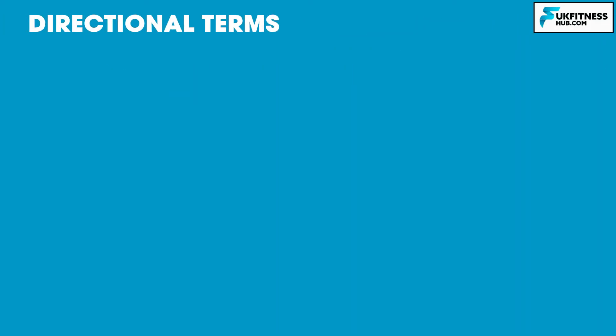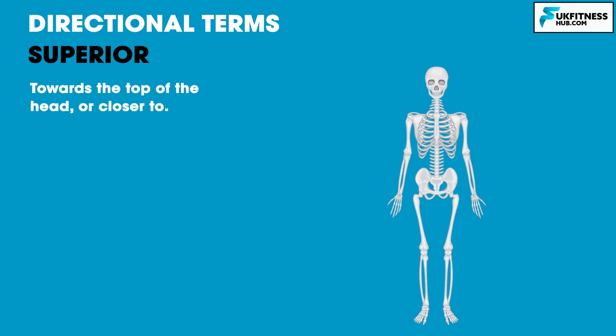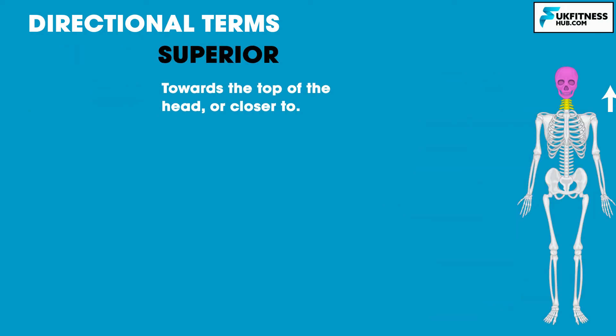The first directional term we're going to look at is superior. Superior means towards the top of the head or closer to. We could describe the skull as being superior to the neck because the skull is above the neck.